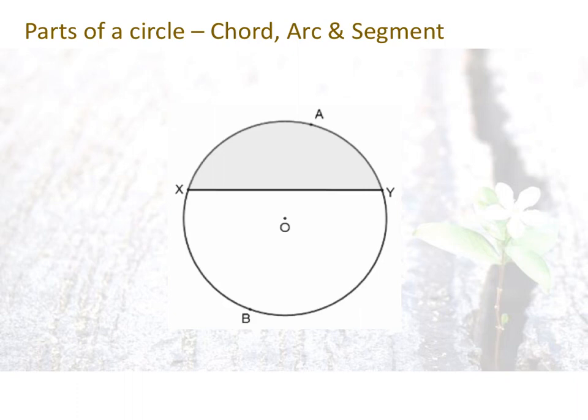A chord means, for example, a straight line joining from two points, one point on the circumference of the circle to another point on the circumference of the circle. So this is a chord.